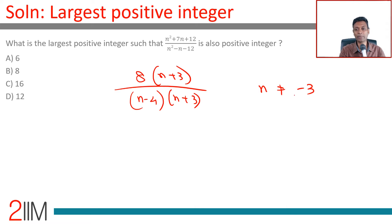n cannot be minus 3. So this can be knocked off. 8 by n minus 4 has to be an integer.